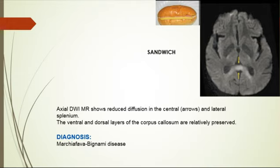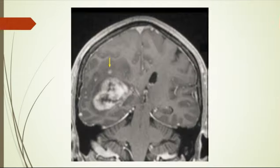In the chronic phase, the region necrotizes and cavitates. Other processes that can affect the corpus callosum include infarction, demyelination, trauma — as in diffuse axonal injury — and MS. However, these entities have different clinical presentations and do not typically produce this specific sandwich appearance.